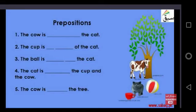Number 4. The cat is dash the cup and the cow. As you can see in the picture, the cat is between the cup and the cow.